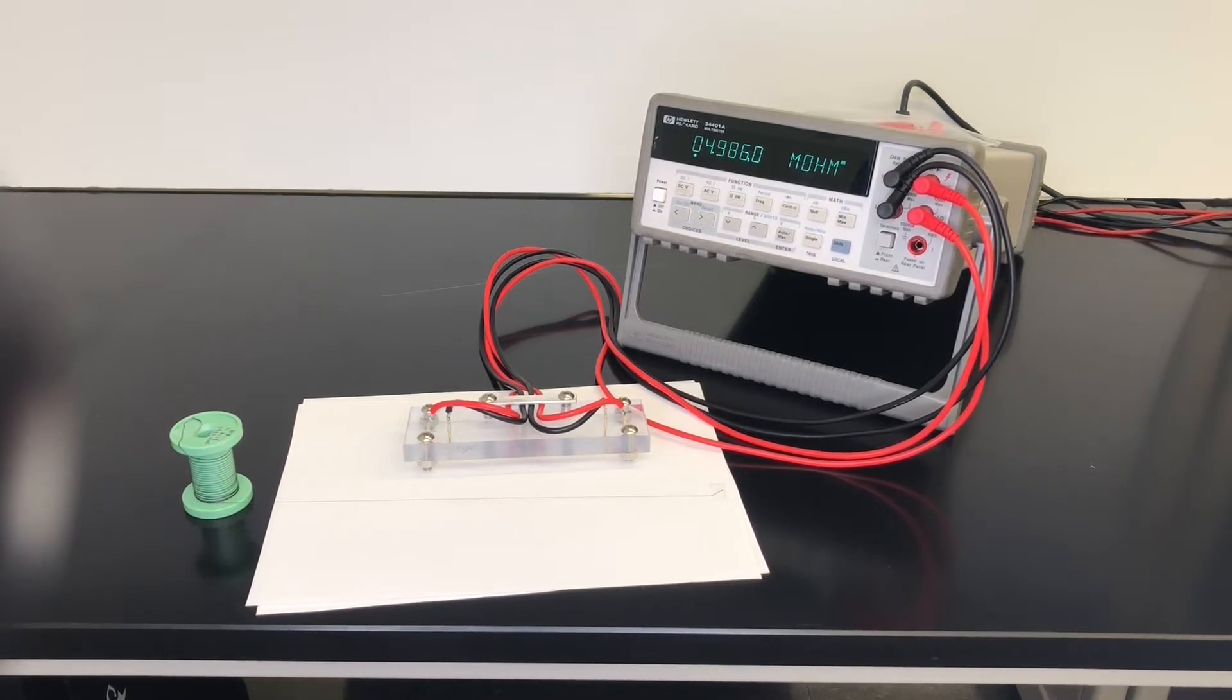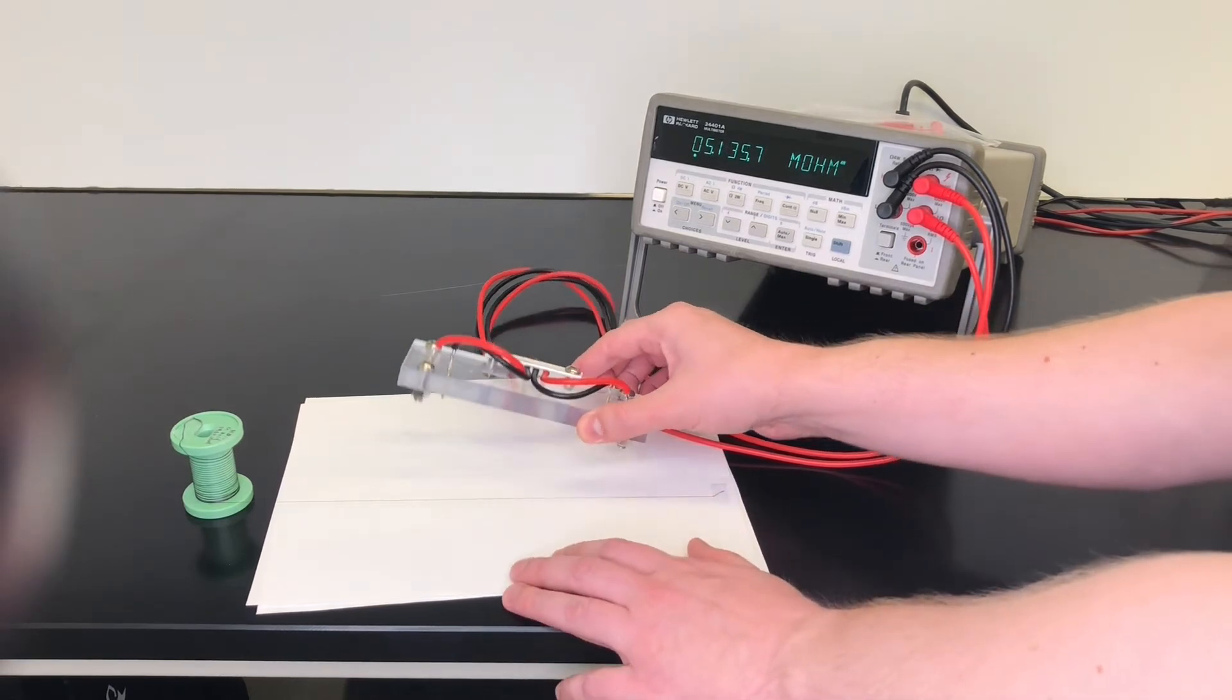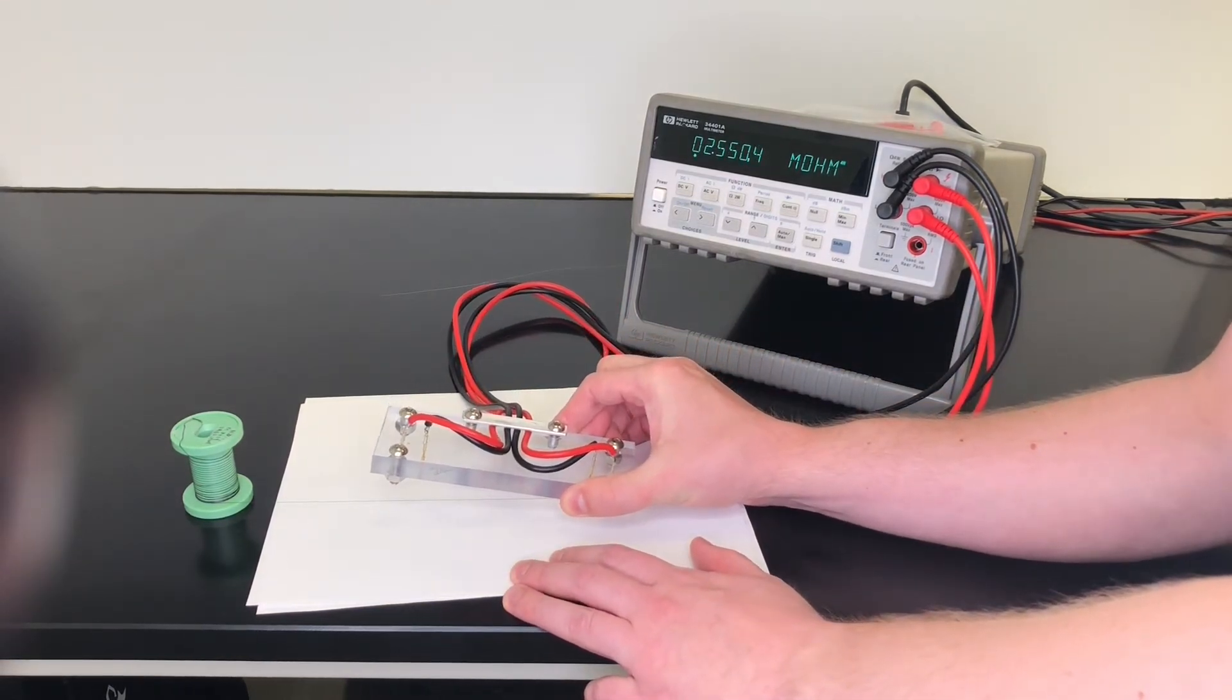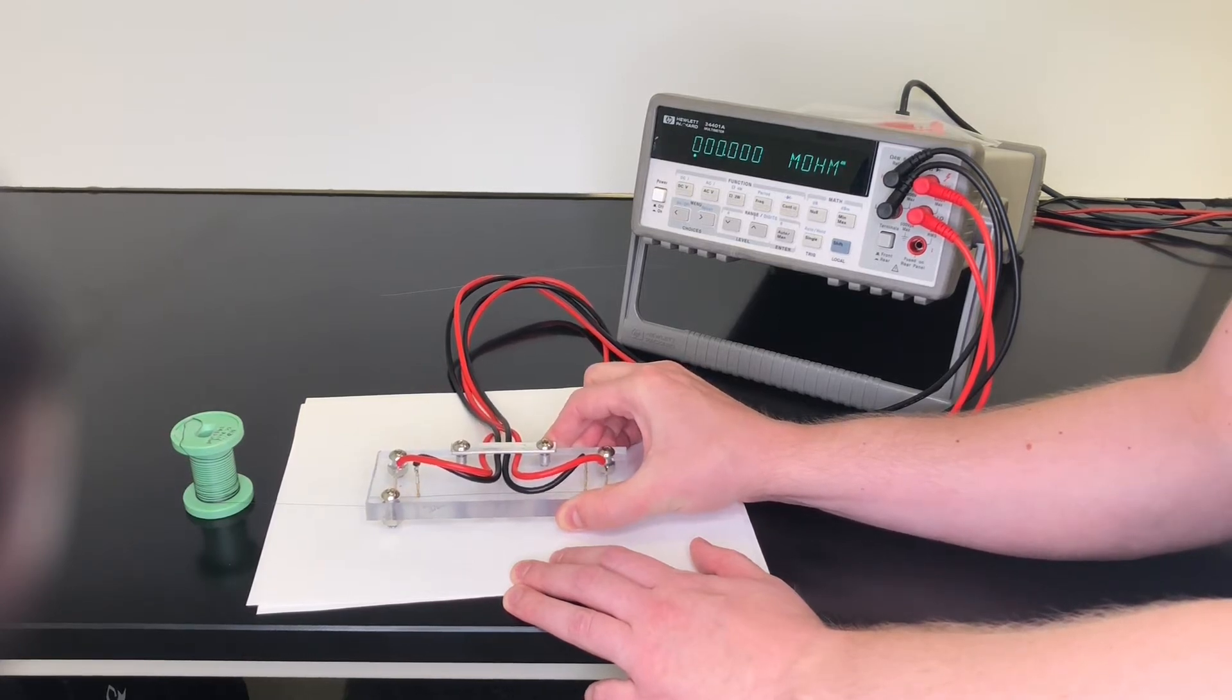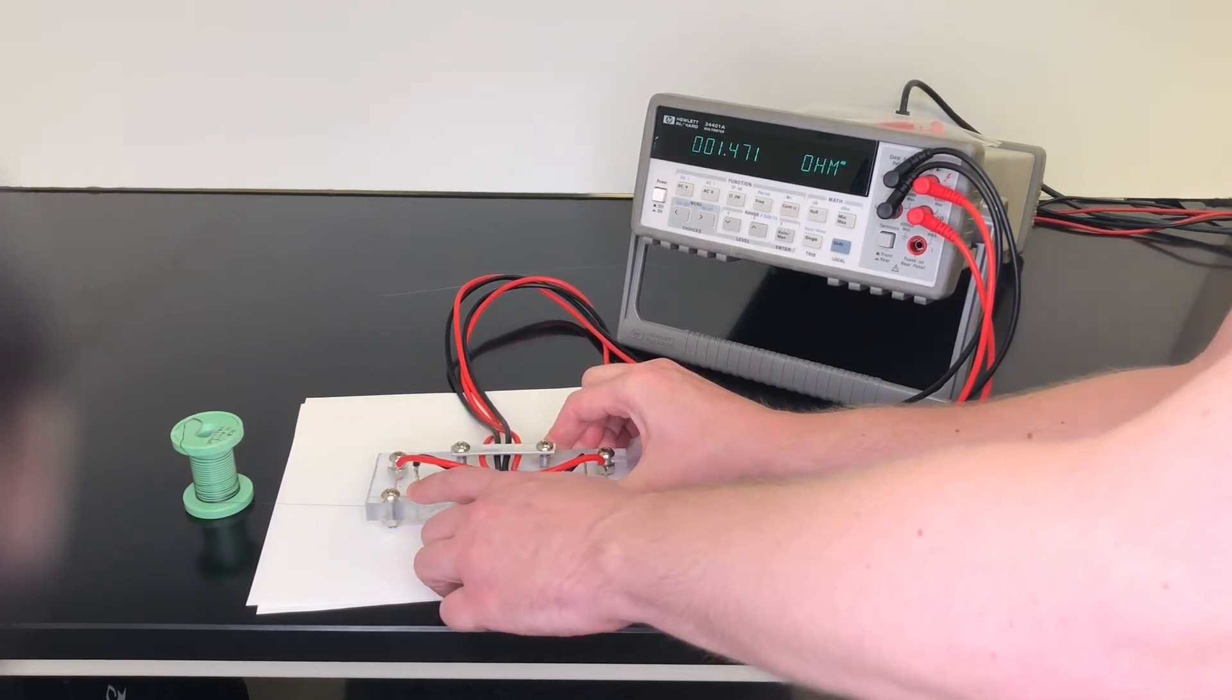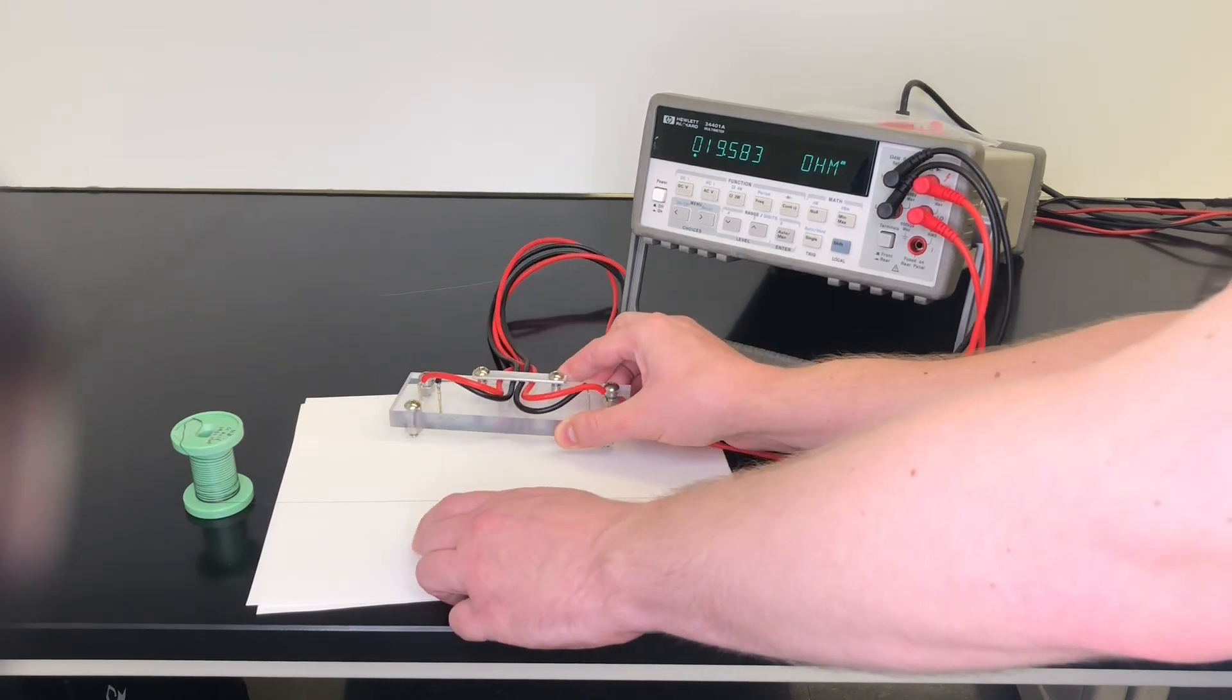Next, we test the linear resistance of this material using a four-point probe, as we've demonstrated in previous videos. The distance between the inner contacts on this probe is 10 centimeters, and as you can see we're measuring 1.47 ohms of resistance across that 10 centimeter length, giving it a conductivity of 4.4 megasiemens per meter.